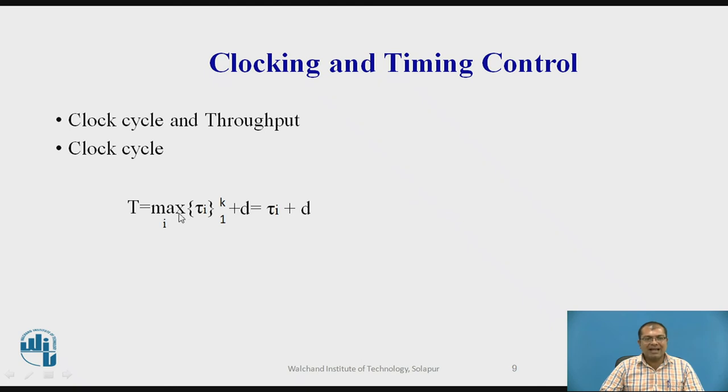So where tau m was the maximum. So that max is picked from all the tau i's of respective stages, which is varying from 1 to k. So among this, the maximum tau value will be picked plus d. So here it is written as tau m plus d. So this is the clock cycle period.